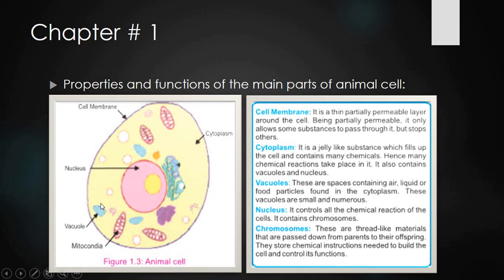In animals, vacuoles are very small and their number is also very large. Now, what is the nucleus? It controls all the chemical reactions of the cells and contains chromosomes. The nucleus controls all the chemical reactions taking place in the cytoplasm, and chromosomes are present inside it.